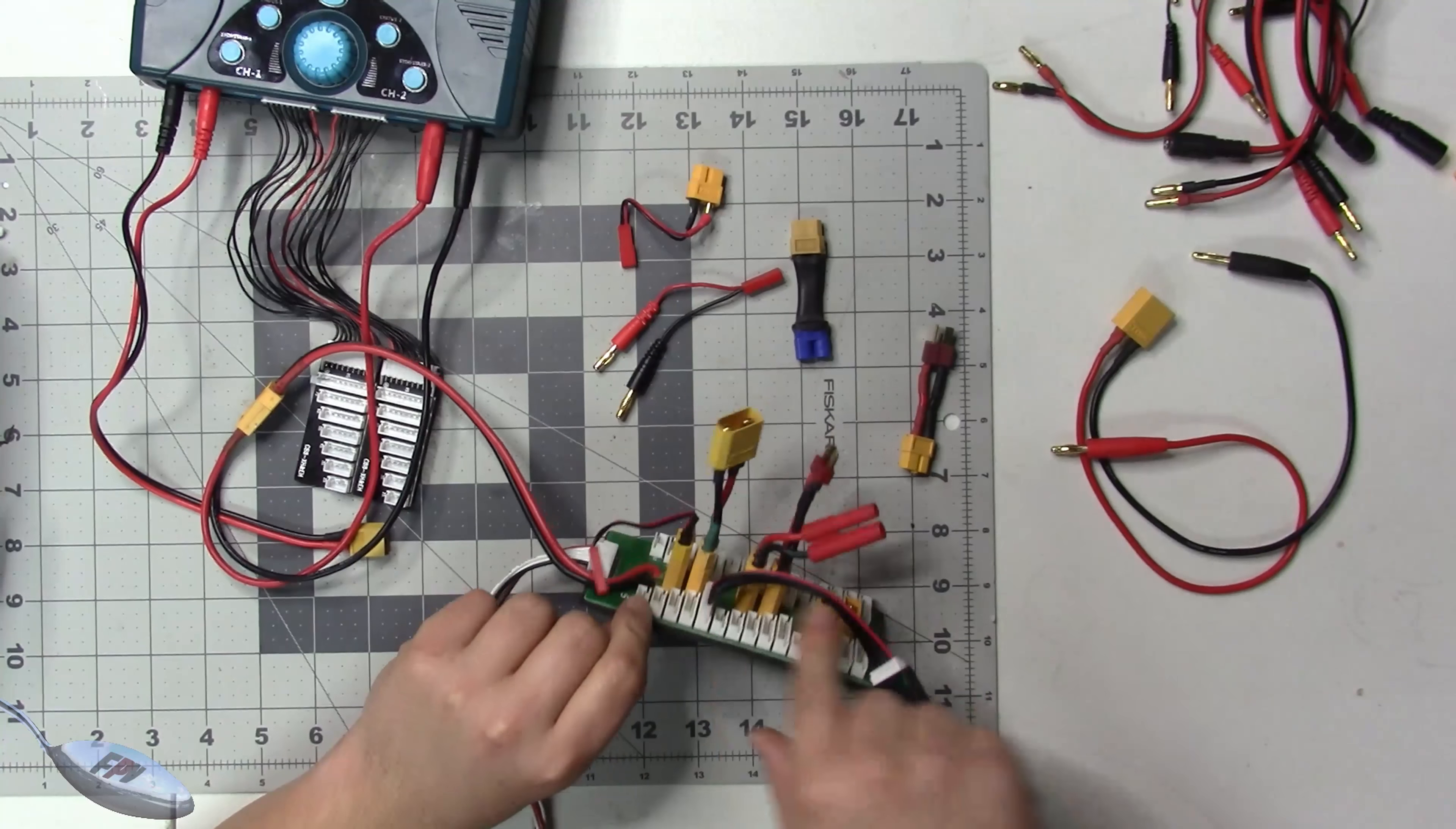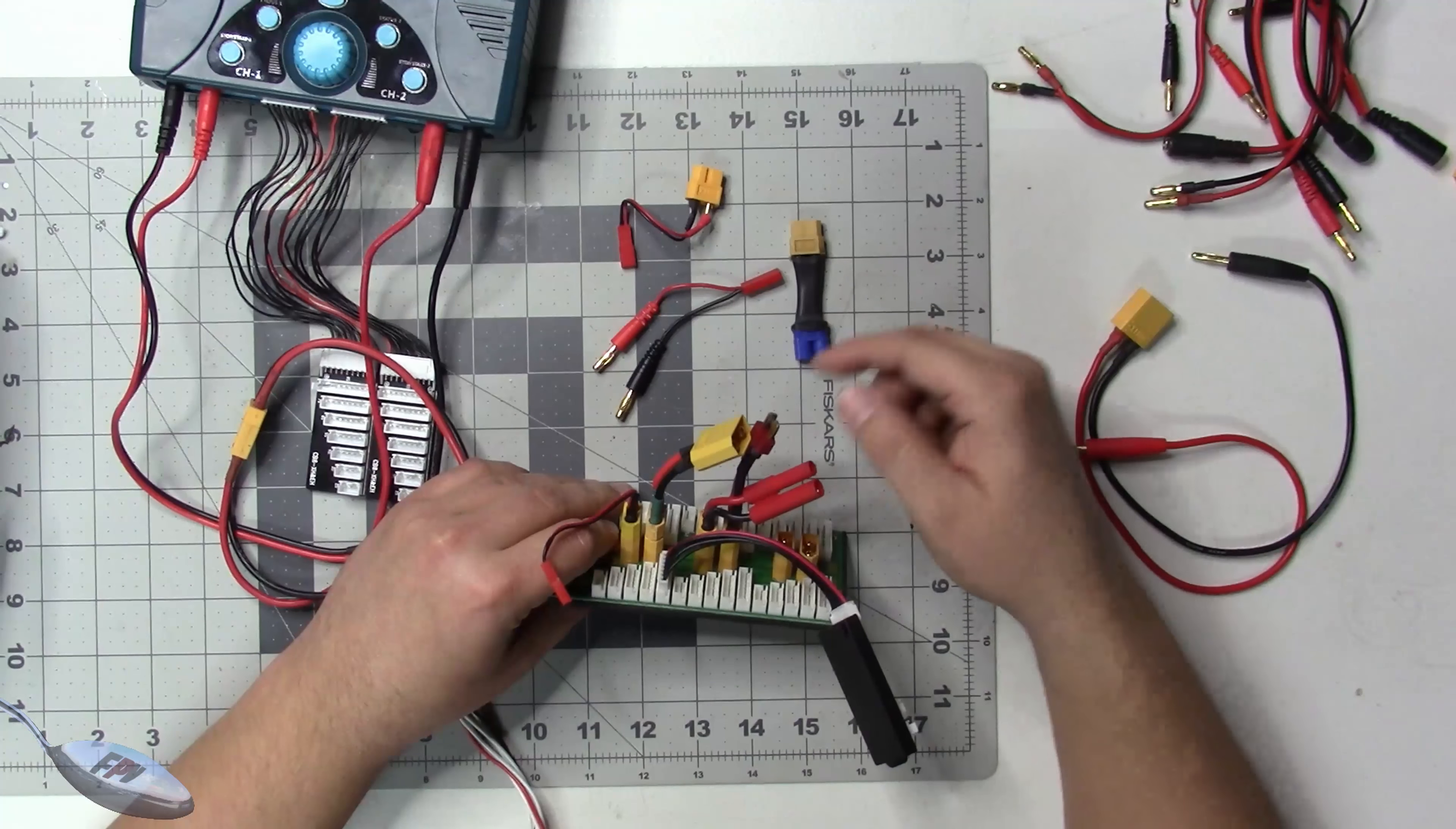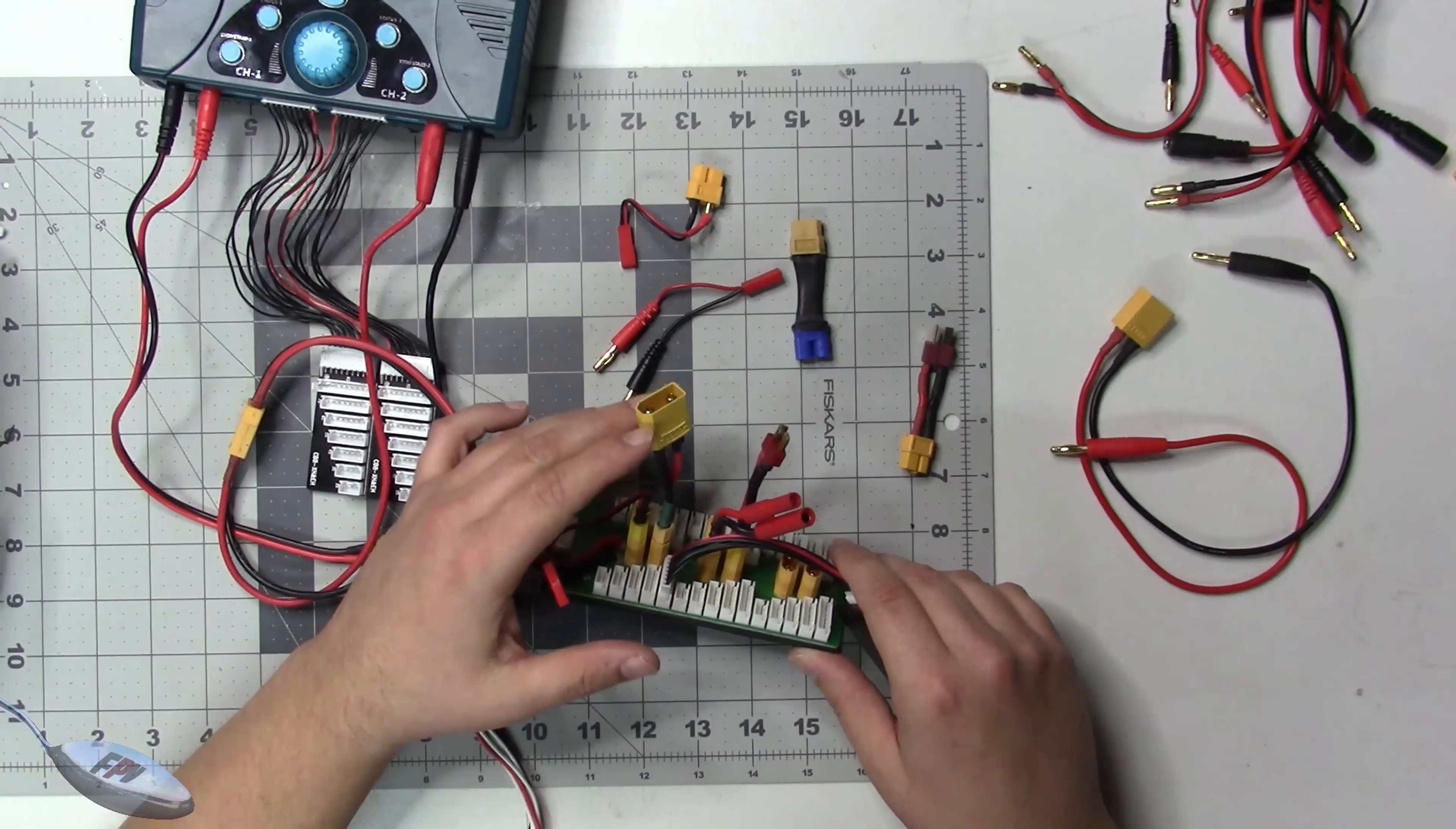You can have all these different accessories plugged into your parallel charging board and whatever one you want plugs into there. Or you can put a bunch of the same style adapter into it and charge the same batteries. The nice thing about this type of adapter too is you also have your universal options.